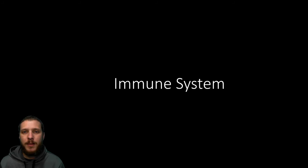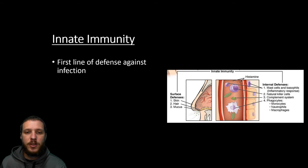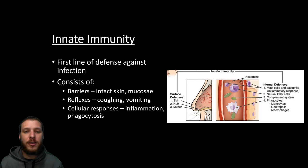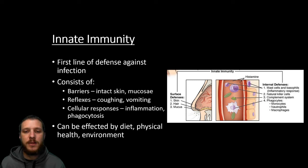The immune system has two major components. Immunity is the body's ability to recognize and respond to pathogens and harmful agents. The two major types are non-specific, also known as innate immunity, and specific, also known as acquired or adaptive immunity. Starting with innate immunity — the first line of defense — this includes barriers, reflexes, and cellular responses like inflammation or phagocytosis. Barriers include intact skin and mucus lining the entryways into the body. Reflexes include coughing or vomiting to expel pathogens. These can be affected by diet, physical health, and the environment.